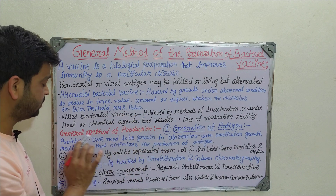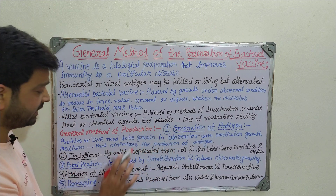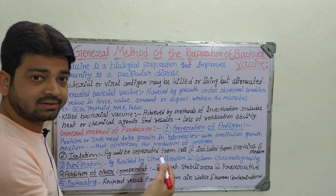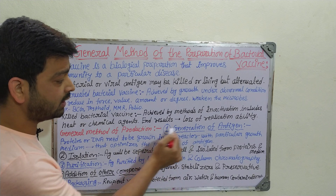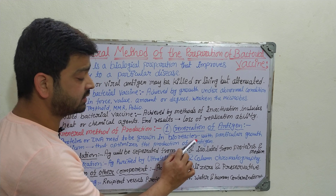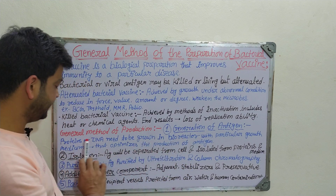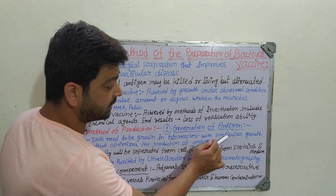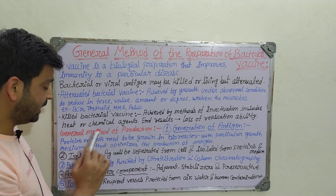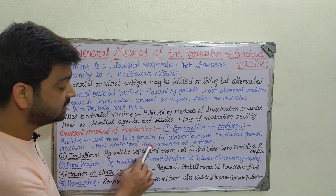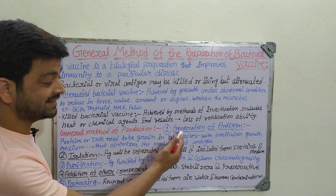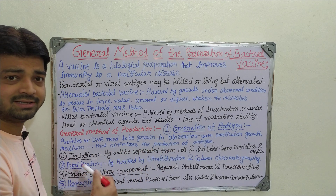The general method of production involves five steps. The first step is generation of antigen. We need to cultivate the antigen — the protein, DNA, or any required material — grown in a bioreactor with a particular growth medium suited to the specific bacterium, such as typhoid bacteria, to optimize the production of antigen.